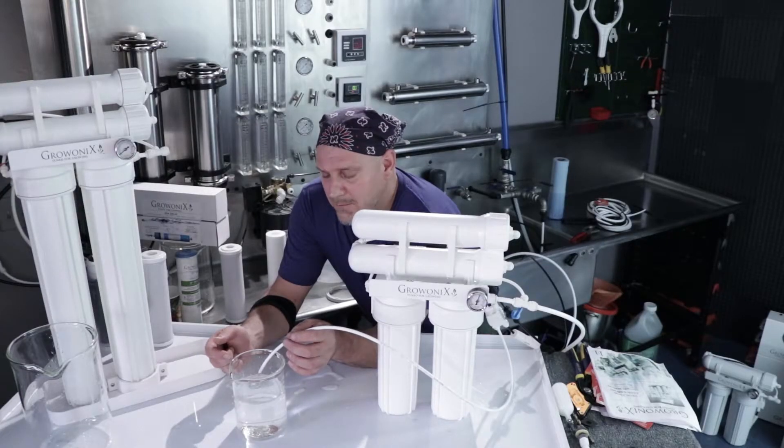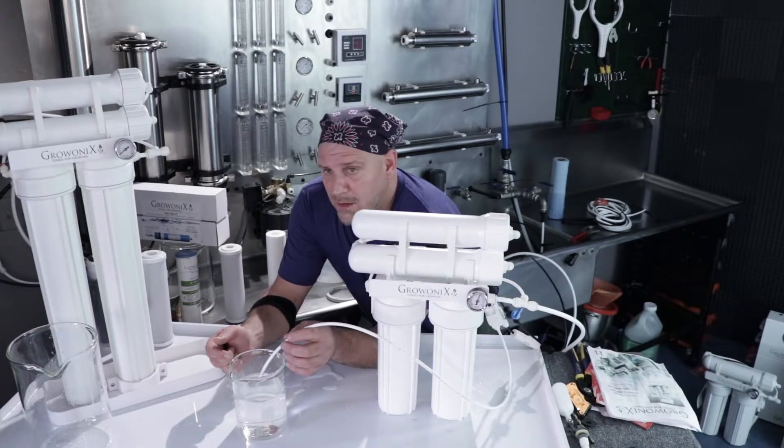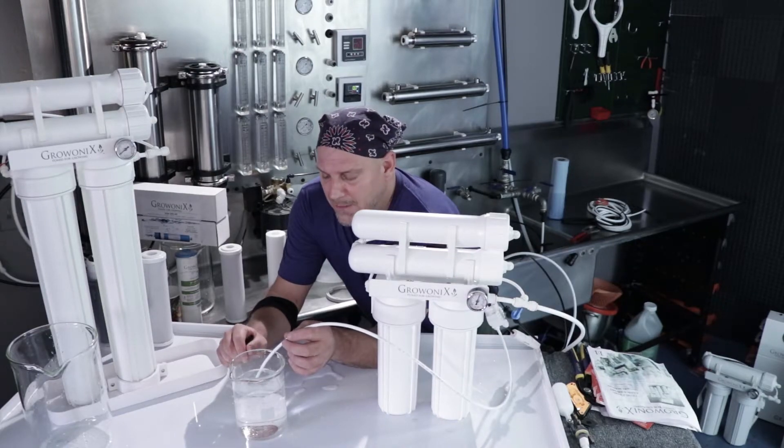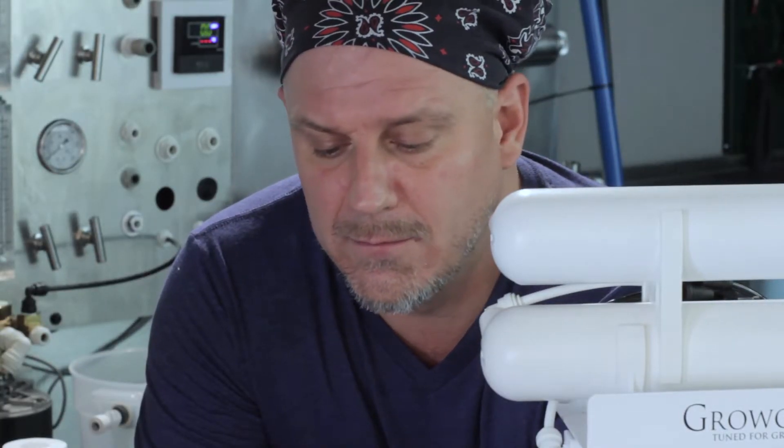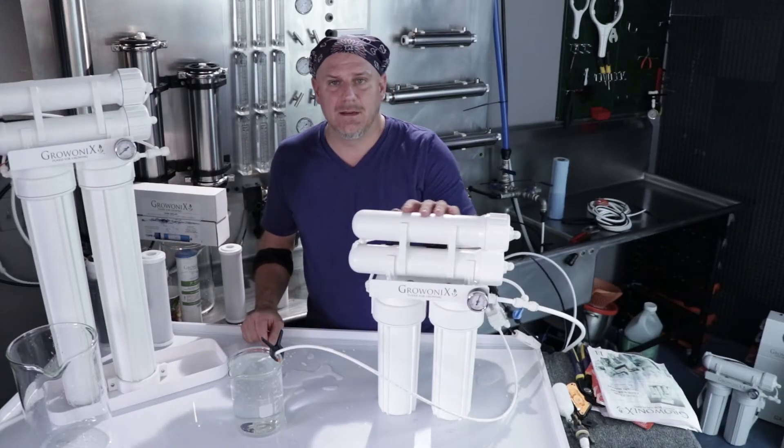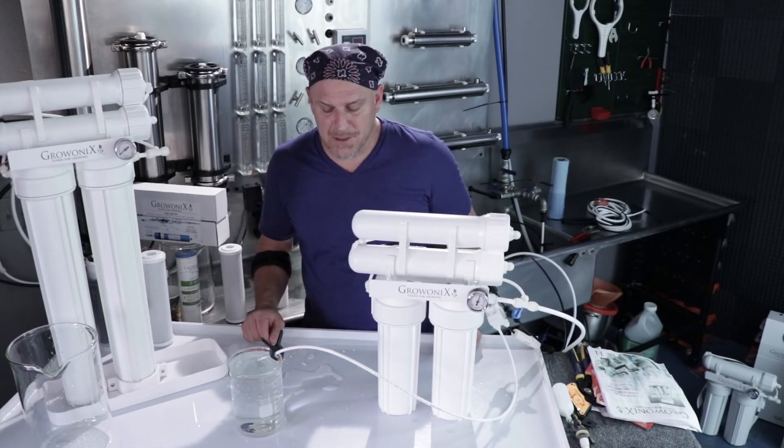Really, you could dump the first 20 gallons of water. This thing makes about 17 gallons an hour. Under warmer water and higher pressure, it can make up to 23, 24. So I say let it run for a half an hour and just don't use that water. And after a half an hour, this will be perfect water. And that's how you purge a membrane and get ready for a normal RO operation.